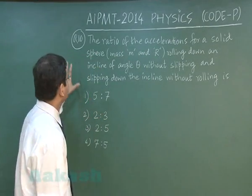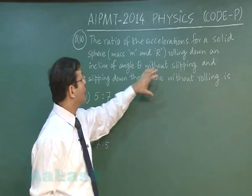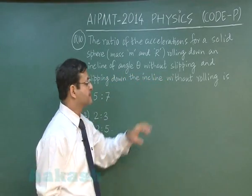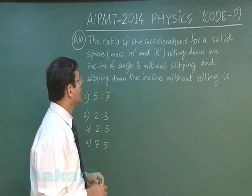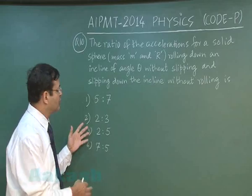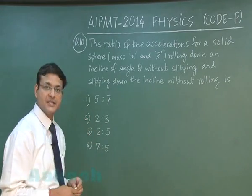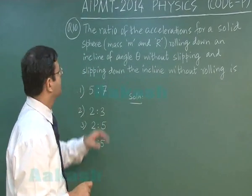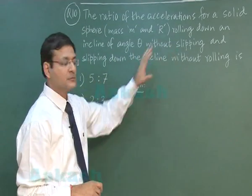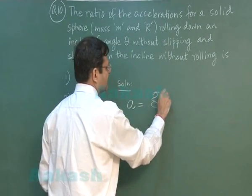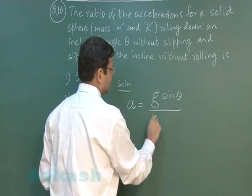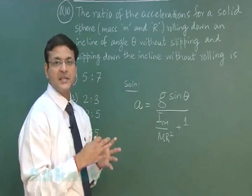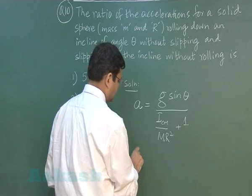In question 10, we find the ratio of accelerations for a solid sphere of mass m and radius r: first, rolling down an incline of angle theta without slipping, and second, slipping down without rolling. The acceleration with rolling is g sin theta divided by (ICM over mr squared plus 1), and without rolling it is simply g sin theta.